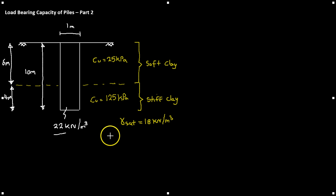An important note for clay soils: the limiting capacity is often controlled by the short term, i.e. the undrained conditions. We're going to work through this example as before, looking at the base resistance, the shaft resistance, the weight of the pile, and then ultimately calculating the ultimate load that the pile can take.